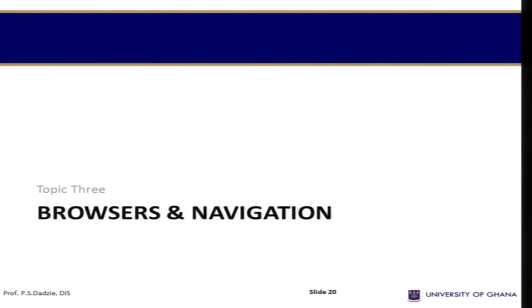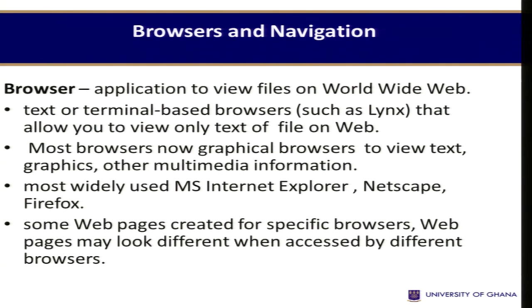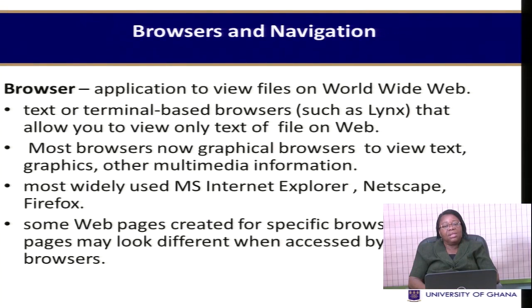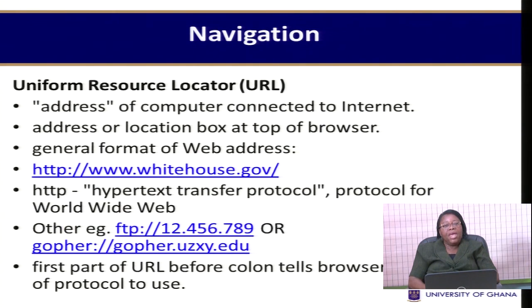We also have what will enable you to search the internet — we call these the browsers, and the browsers enable you to navigate. A browser is an application to view files on the World Wide Web. Popular browsers include Internet Explorer, Netscape, and Firefox, and these are used to launch and navigate the internet. To navigate the internet, you should be familiar with what is called the Uniform Resource Locator, which is the address of computer sites. There are several URLs that you need to pay attention to, and they mean many things to us.